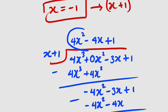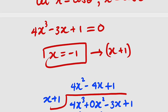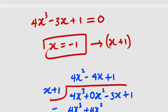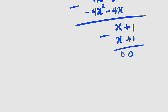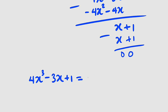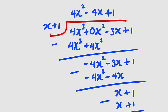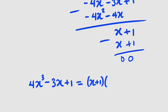This implies that the other factor is 4x squared minus 4x plus 1. Therefore, 4x cubed minus 3x plus 1 equals x plus 1 multiplied by 4x squared minus 4x plus 1.